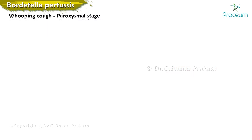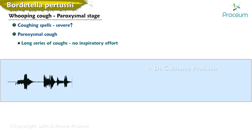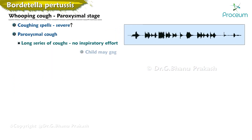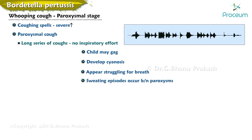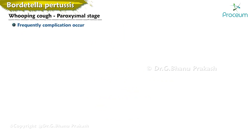During the paroxysmal stage, coughing spells increase in severity. The paroxysmal cough is distinctive — a long series of coughs between which there is little or no inspiratory effort. The child may gag, develop cyanosis, and appear to be struggling for breath. Sweating episodes may occur between paroxysms. Cough may be worse at night and can be triggered by inhalation of steam, mist, or other respiratory irritants. Complications occur most frequently during the paroxysmal stage.